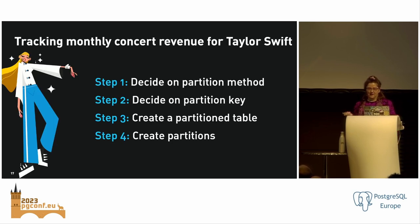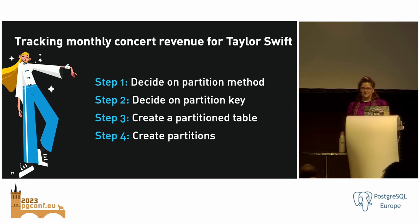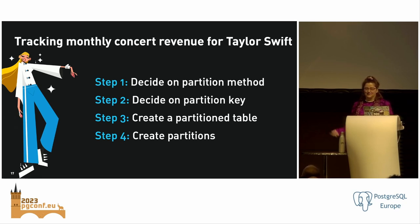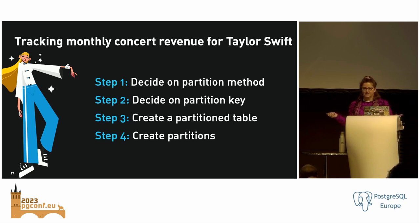Let's look at tracking monthly concert revenue for Taylor Swift. If I wanted to track the monthly concert revenue for the summer months in the northern hemisphere, I would first decide on the partition method — which in this case is partition by range. I have to decide what my partition key is, then create a table. Let's call the table concert_revenue. I'll keep track of it by city, with sale_date as the partition key, tracking merchandise sales as well as concert ticket sales.